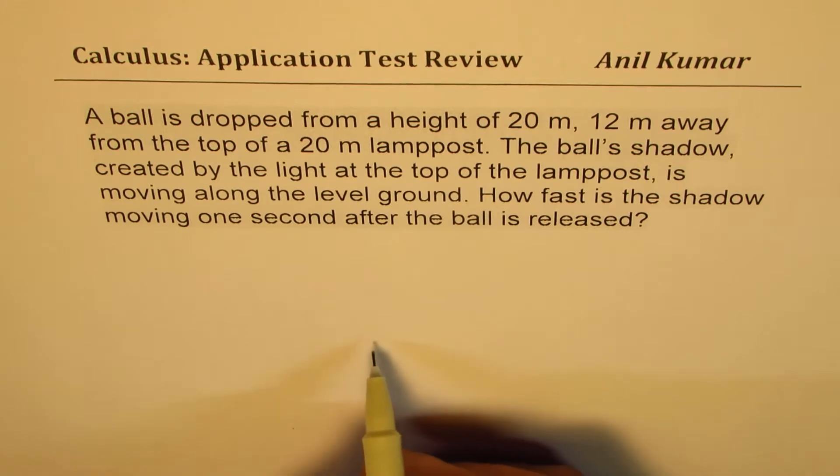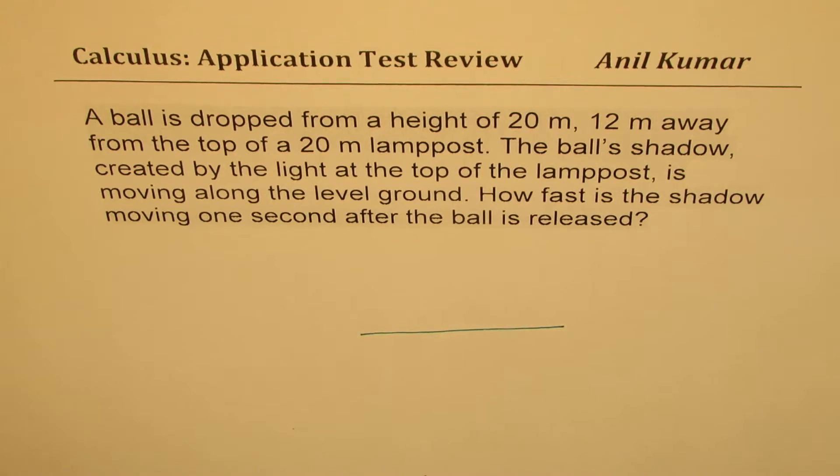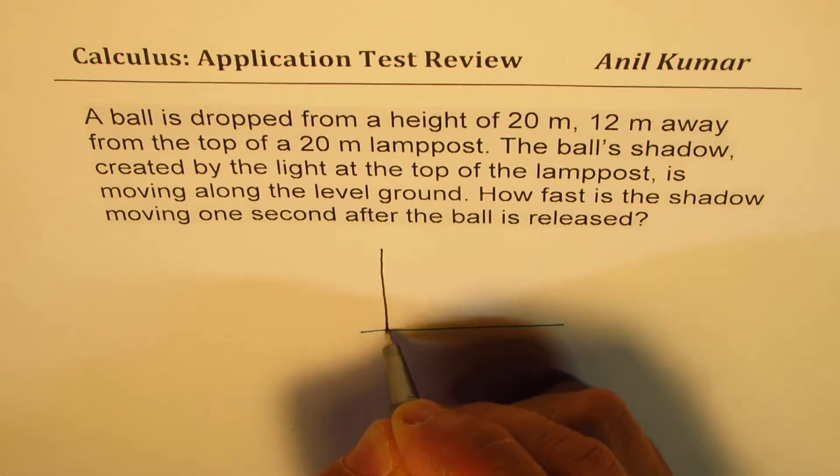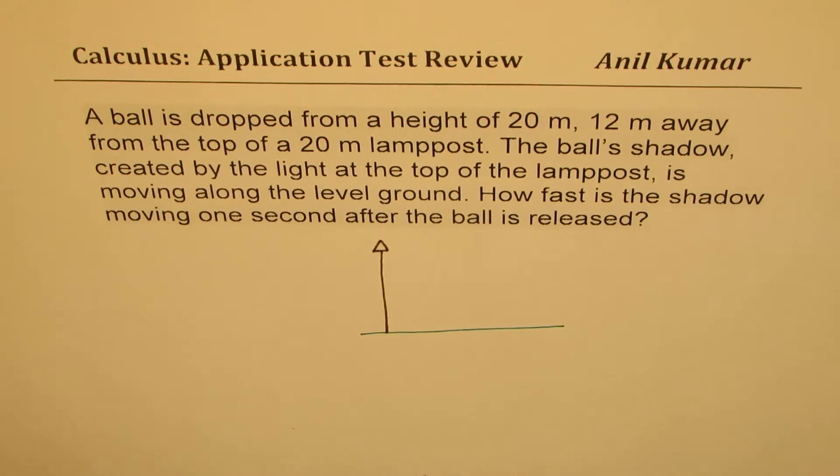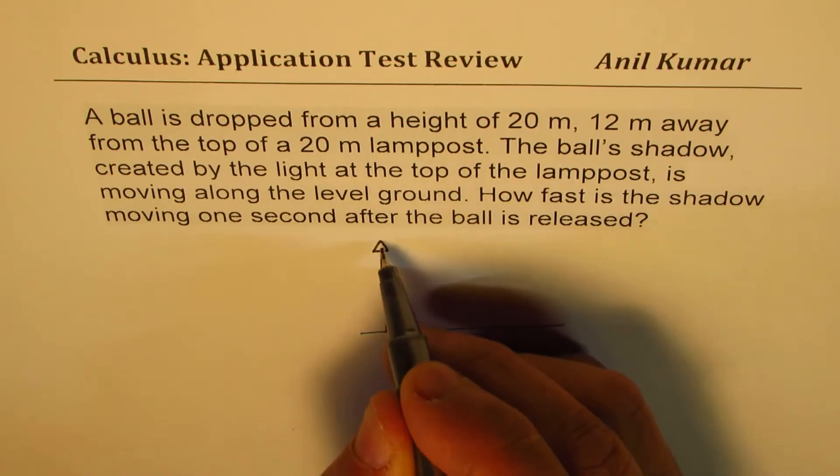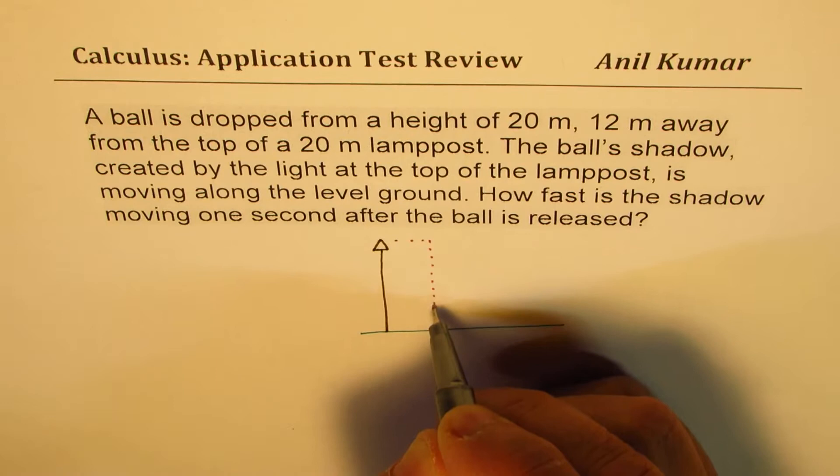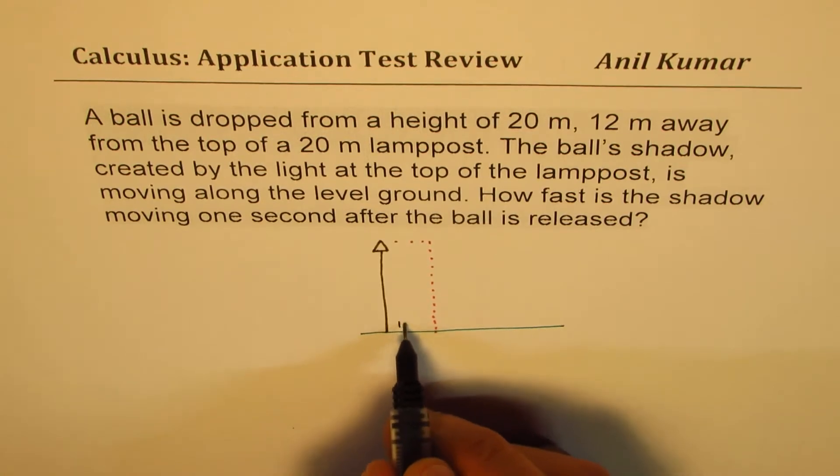Let's first make a small sketch here to understand the situation. So that is the level ground and we have a lamp post which is 20 meters high. A ball is dropped 12 meters away at the same level. Let's say that is the trajectory of the ball and this distance here is 12 meters.